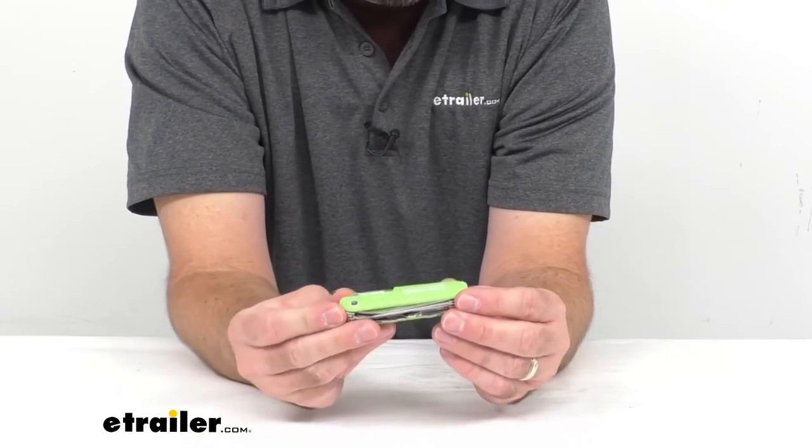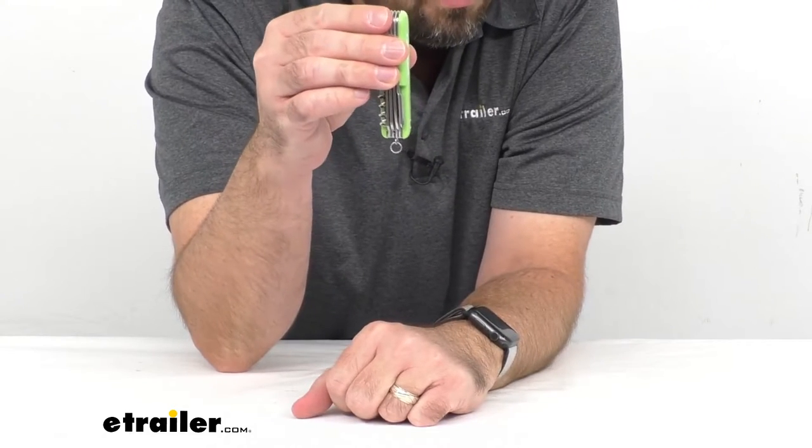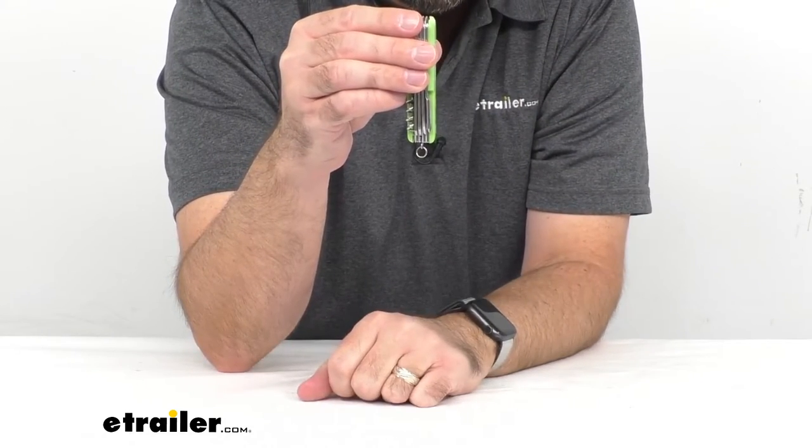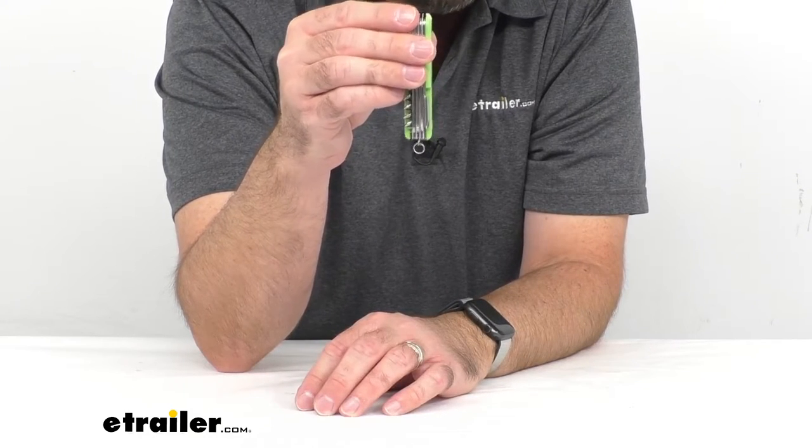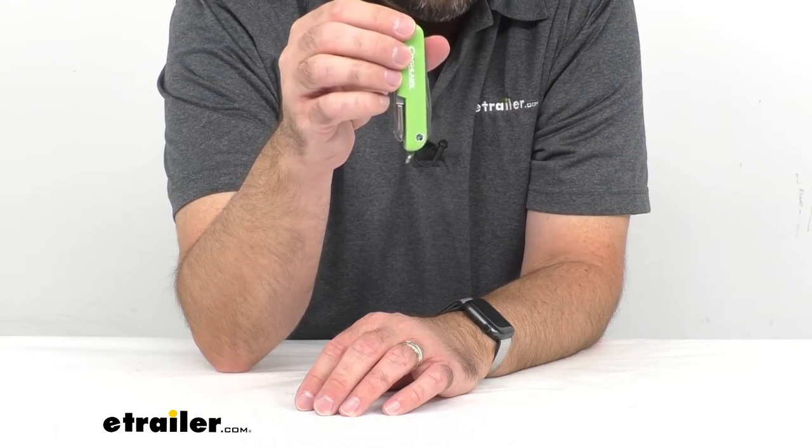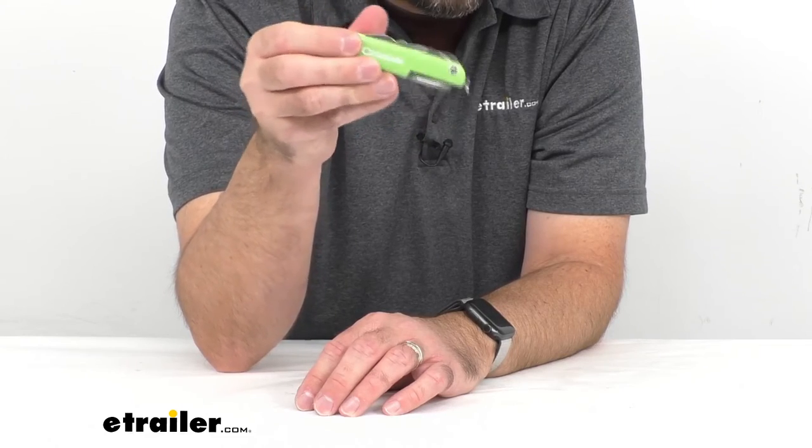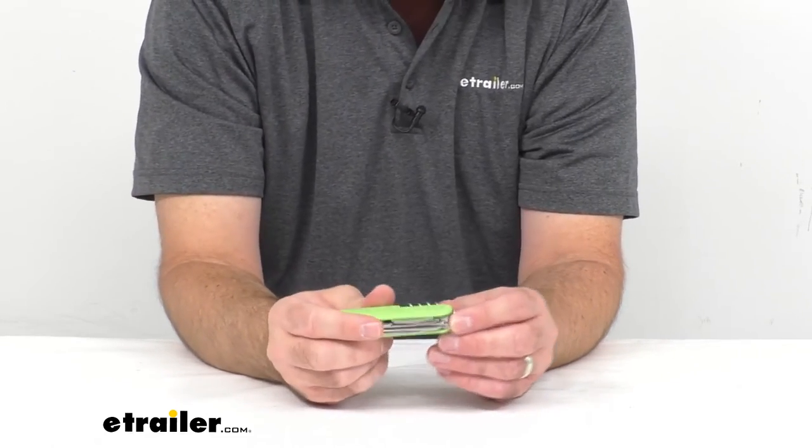That about rounds out all the functions and features on this particular knife. One other thing I will mention—it does come with a key ring. This does come in handy if you want to put it on your key ring. We have several selections of carabiners here at eTrailer. One that I recommend is our Coughlin 8 millimeter carabiner that comes with a key ring that you could use to attach something like this to. You can find that on our website, item number CG68PR.